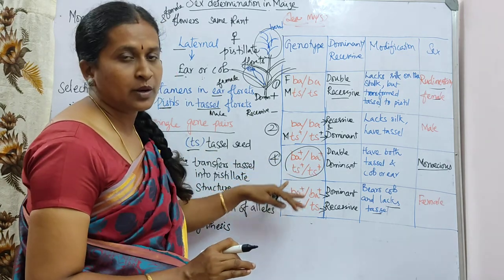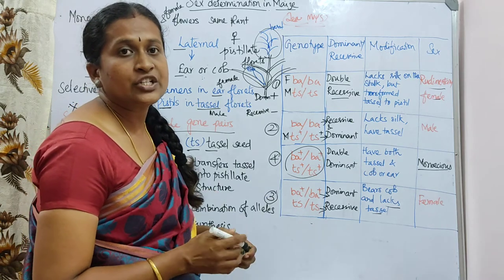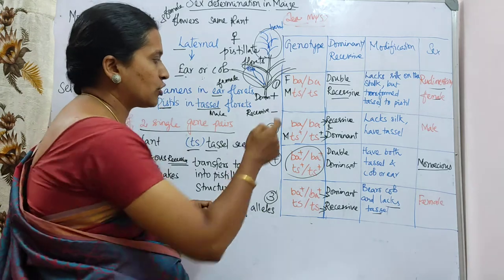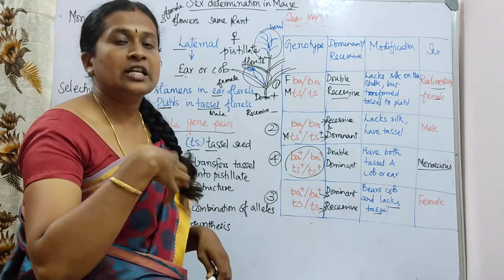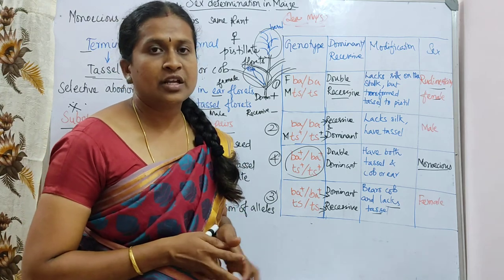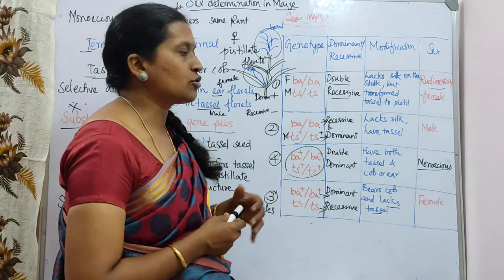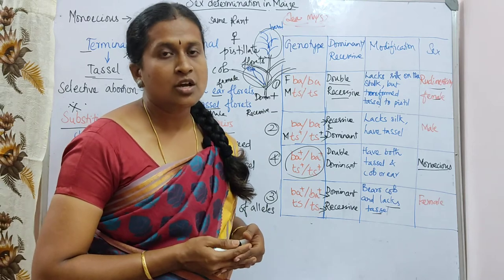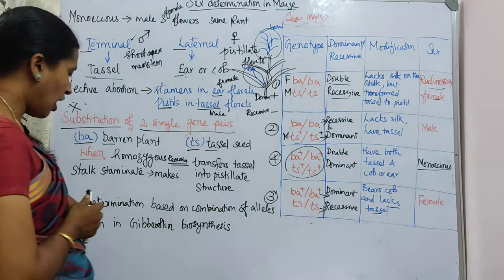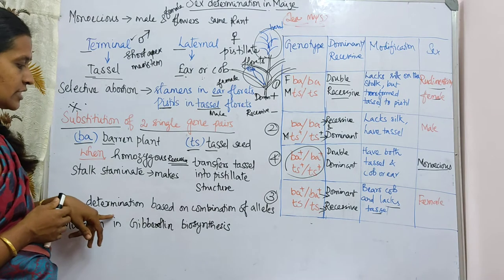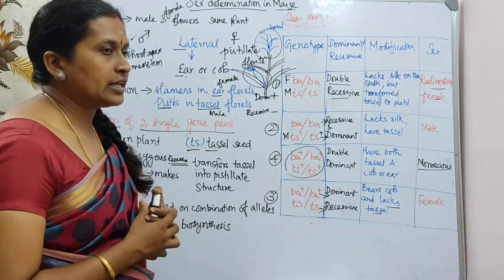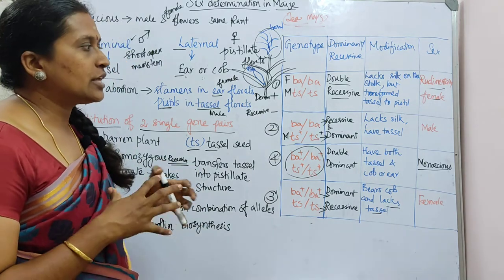This monoecious condition is very common in the maize plant. The dioecious condition is very rare in maize. Conditions two and three lead to dioecious plants, but that is very rare, while the double dominant monoecious condition is common.